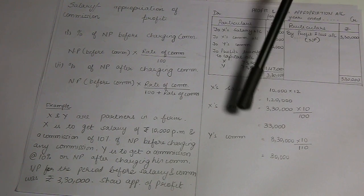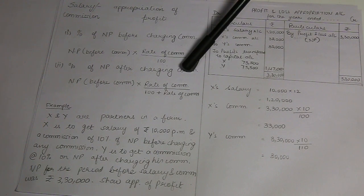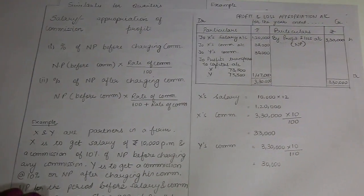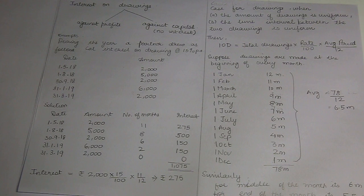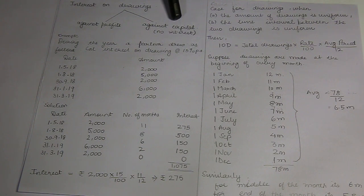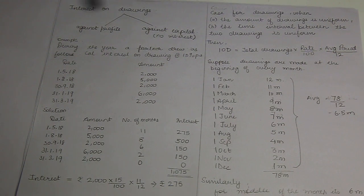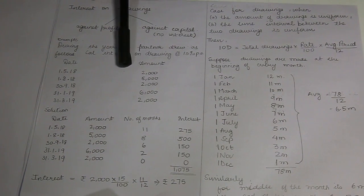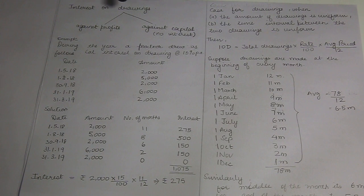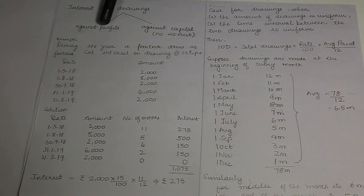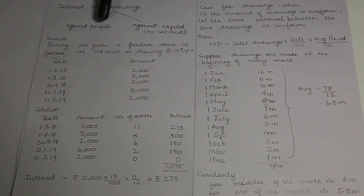Moving to the next item of P&L appropriation, which is interest on drawings. This is a very important part. Interest on drawings can be charged against profit or charged against capital. In the fixed capital method, two accounts are prepared for each partner: first, the capital account; second, the current account. If a partner has done drawings charged against the profits of the firm — that is, against the net profit — then in that case interest on drawings will be charged.